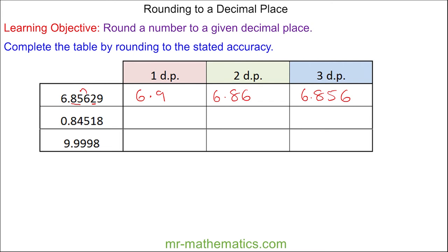For the next one, the four does not round up the eight, so it becomes 0.8 for one decimal place. The five does round up the four, because it is halfway between 0.84 and 0.85, so it becomes 0.85 for two decimal places. For three decimal places the one does not round up the five, so it becomes 0.845.